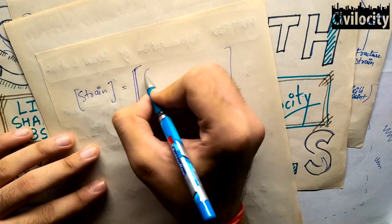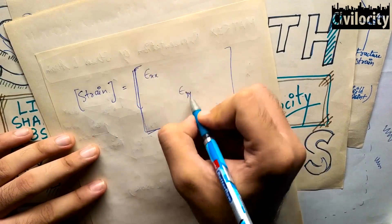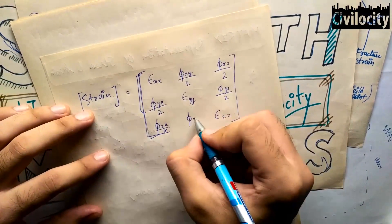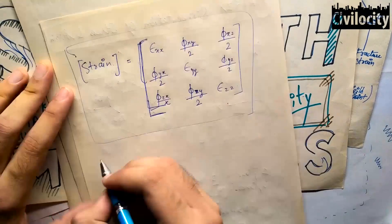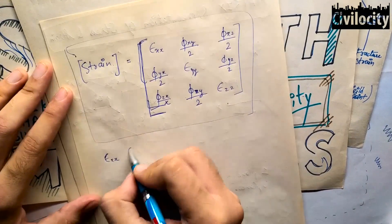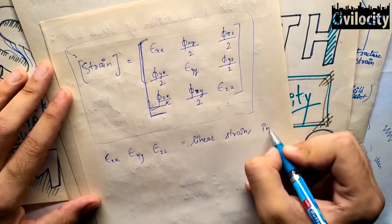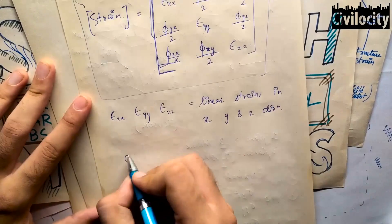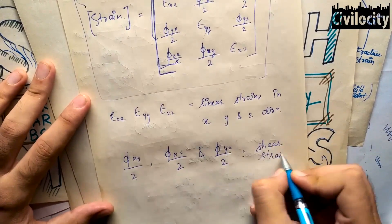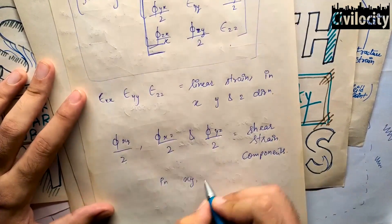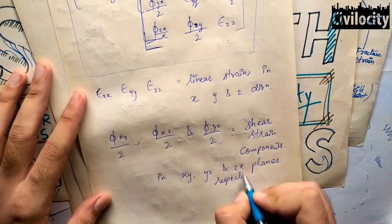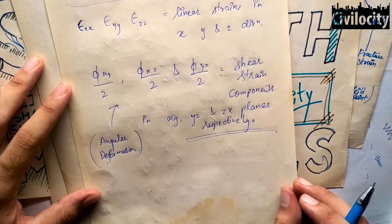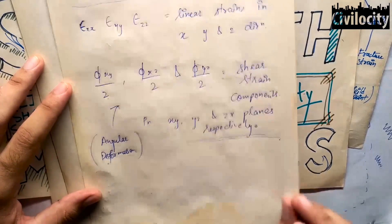In the strain matrix, the diagonal terms epsilon xx, epsilon yy, epsilon zz are linear strains representing directions, while the off-diagonal terms epsilon xy, epsilon xz, and epsilon yz are the shear strain components in their respective planes. This is the matrix representation of strains.